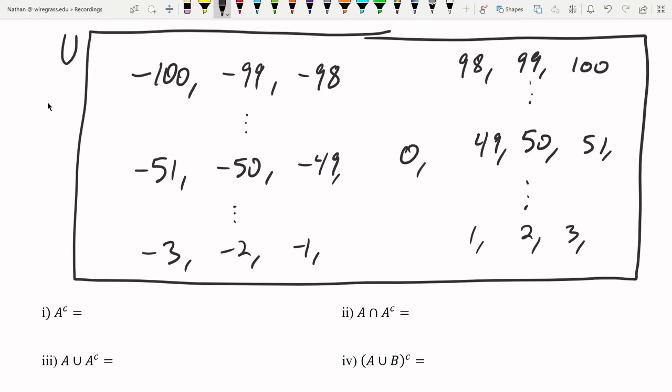And set A was the sets from all the negative numbers. So set A is going to be this red set. So it's going to be this one right here.